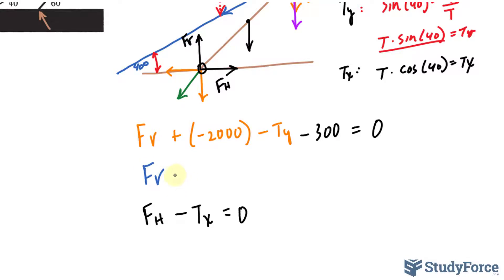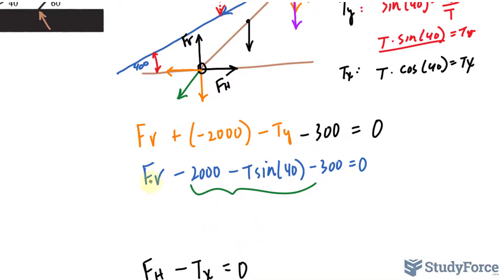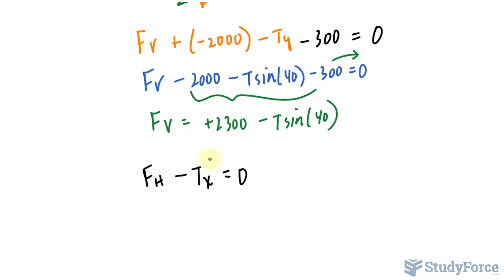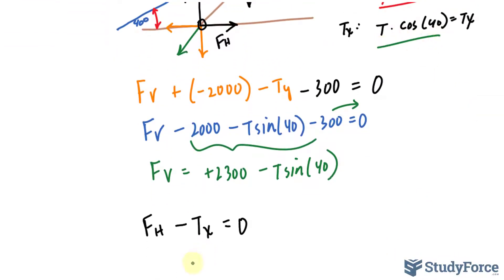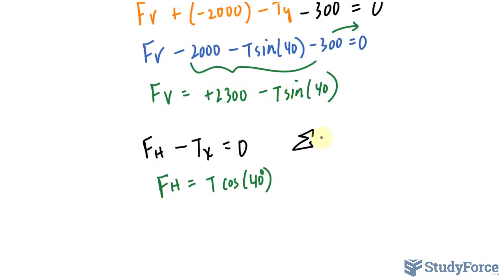Substituting in, we get: F sub V minus 2,000 minus T sine 40 minus 300 equals zero, which gives F sub V equals 2,300 minus T sine 40. And F sub H equals T times cosine 40. As you can see, we have two equations with three unknowns, making it impossible to solve, so we'll need a third equation that relates the torque.